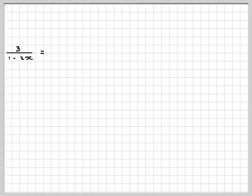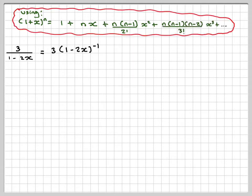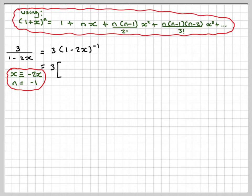Expanding 3/(1 - 2x): this becomes 3(1 - 2x)^(-1). We use the binomial theorem, which is on the formula booklet for a negative or fractional index. Here x is replaced by -2x and n = -1. So we have 3[1 + (-1)(-2x) + ...].